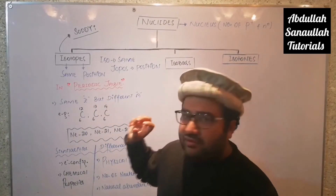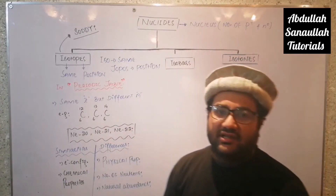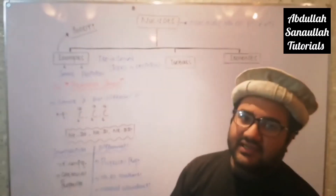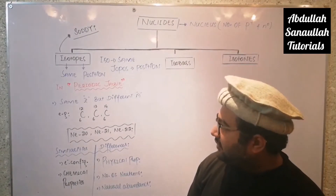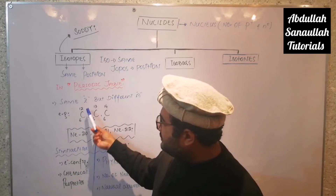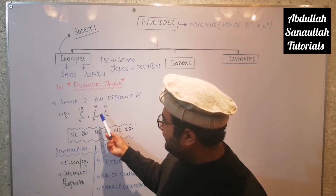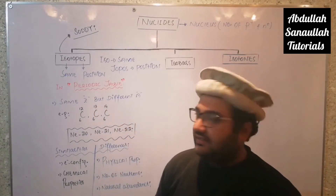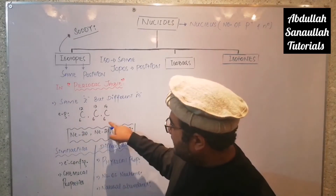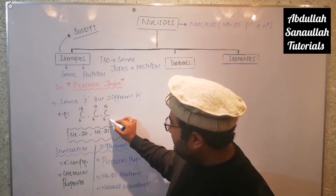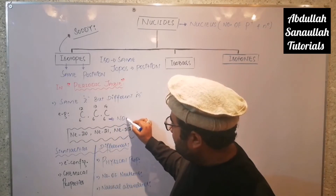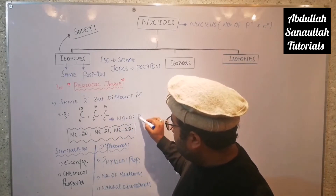Isotopes have the same atomic number but different mass number, and they are atoms of a single element. For example, carbon has three isotopes: C-6-12, C-6-13, and C-6-14. They all have the same atomic number 6, which refers to the number of protons.